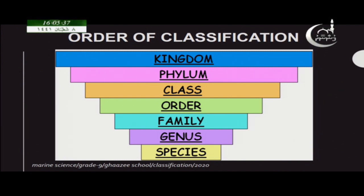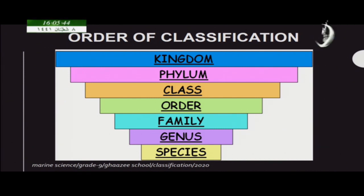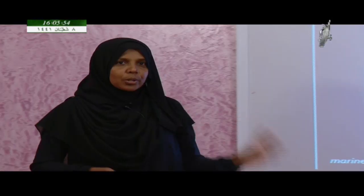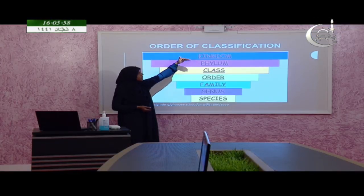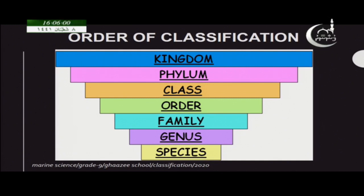The order of classification always starts with kingdom. Next to kingdom is phylum, then class, order, family, genus, and the last is species. You cannot rearrange this order — it should always be the same. It should always start from kingdom and end with species.